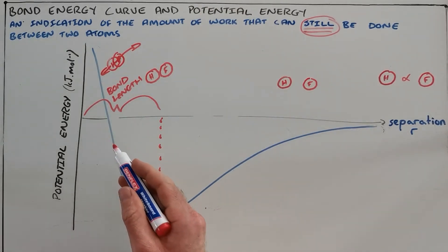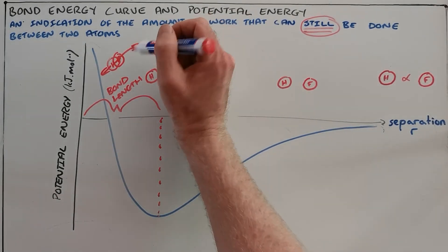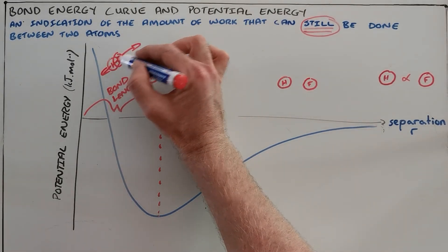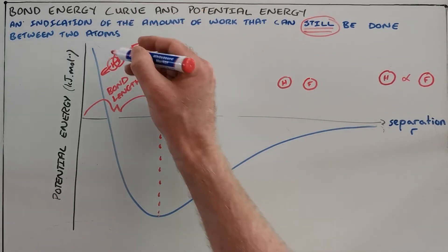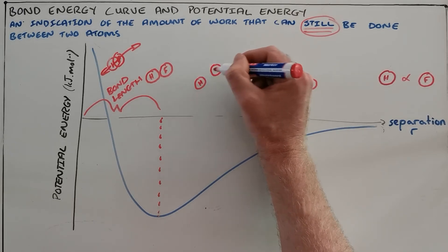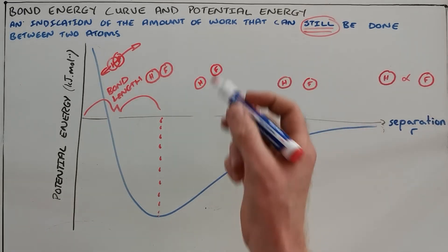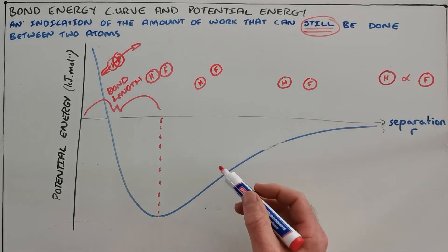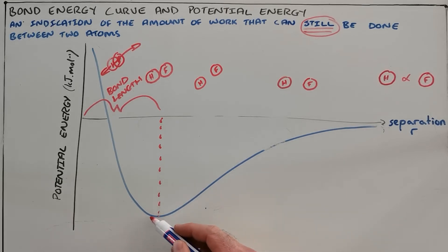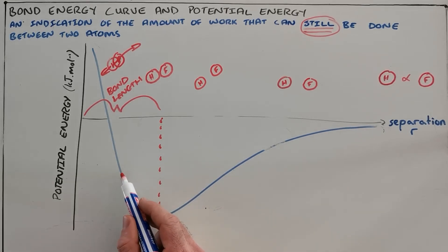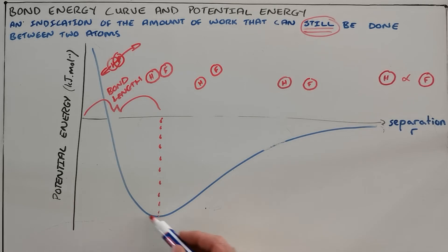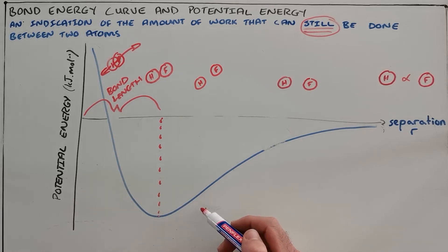As the atoms continue to approach each other beyond the bond length, the nuclei interact and the protons in each nucleus repel each other, causing a sharp increase in potential energy that pushes the two atoms further apart. Because atoms are never entirely stable, we find an oscillation between the two atoms being slightly too far apart — pulled closer by the electrostatic force — then getting too close and being repelled. Most bonded atoms oscillate between being slightly too far apart and slightly too close together.